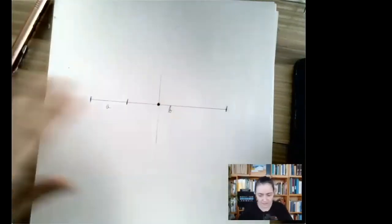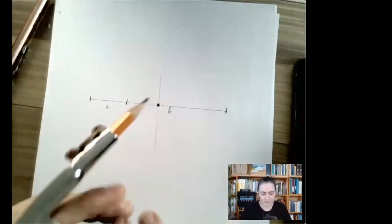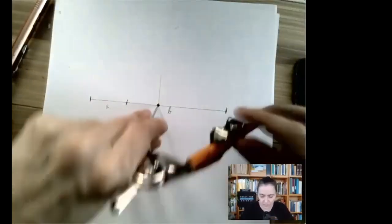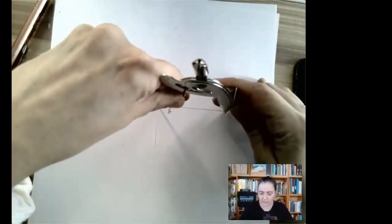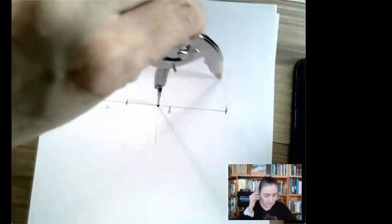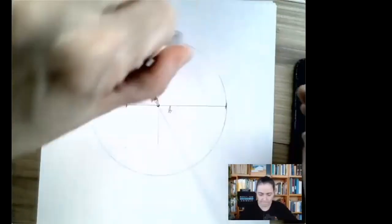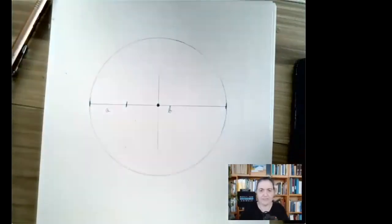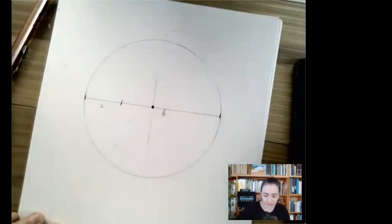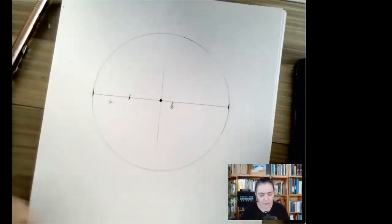All this work was just for that midpoint, so I'm going to take off the rest not to clutter the picture. Now we can draw the semicircle, which starts at the midpoint and ends at one of the endpoints. I like when it hits the other. This is a precise picture.